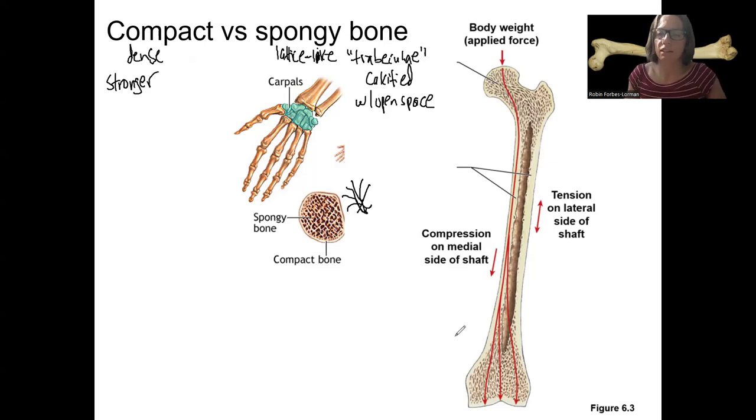Whereas long bones are designed to take force kind of along the long axis where the, and where the muscles pull, compact bone is designed to take force a little bit more in one direction. Okay. That's the basics of those two types of bone.